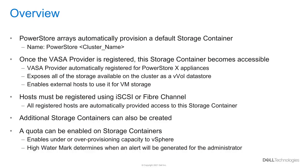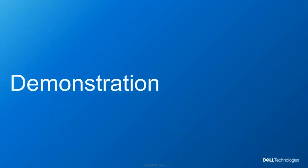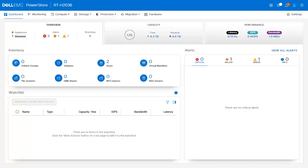Now we will proceed with the demonstration. We will create a host, then a volume and a volume group and map them to the host. We will also show how to create a NAS server, a file system, and a storage container. Let's navigate to PowerStore Manager.